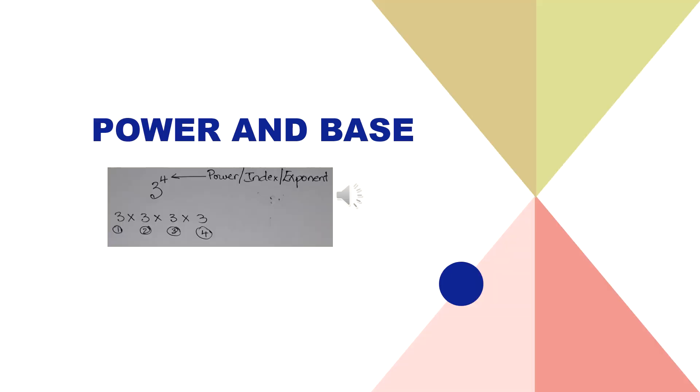The power tells how many times the base should appear in the product. Product means multiplication. So here we have a power which is 4, we call it the 4th power. And below that we have the 3 in the product 4 times because that's what the power indicates. So we have 3 times 3 times 3 times 3. That's what the power does. It tells you how many times to have the base in the product.